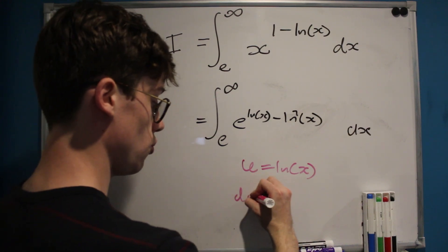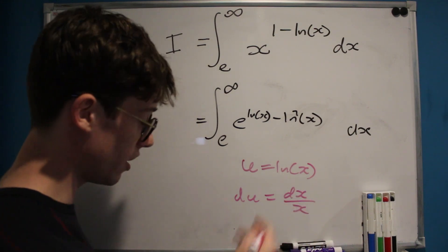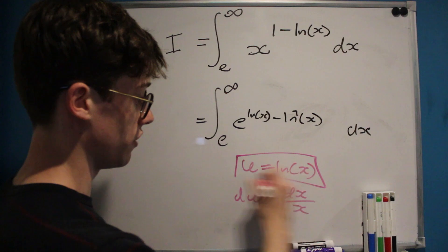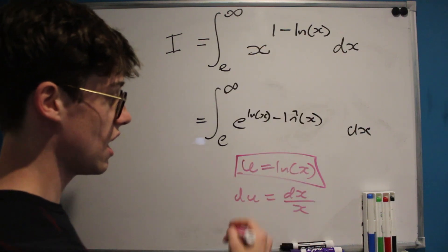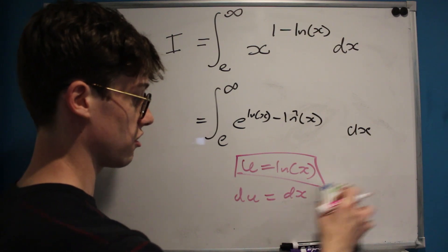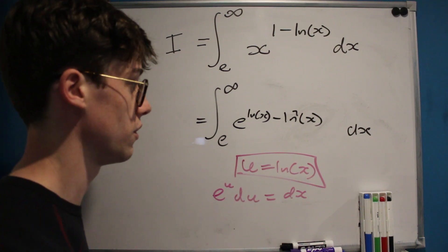And of course this means that du is going to equal dx over x. And how can we write x in terms of u? Well raise both sides of this equation to the power of e, and we'll clearly see that x is equal to e to the u. So if we multiply through by x on both sides of this equation, we know that e to the u du is equal to dx.